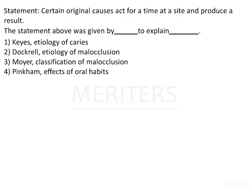This is a slightly different kind of question. We have been given a statement that certain original causes act for a time at a site and produce a result. What they are saying is there is some cause acting for some duration on a particular site, and this is going to bring about some result or change. We have to identify who gave this statement and to explain what phenomenon.